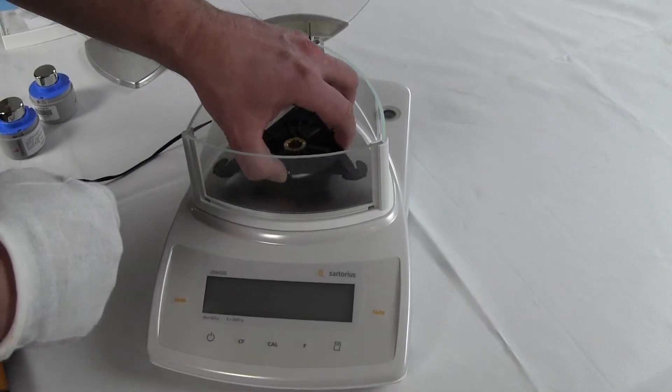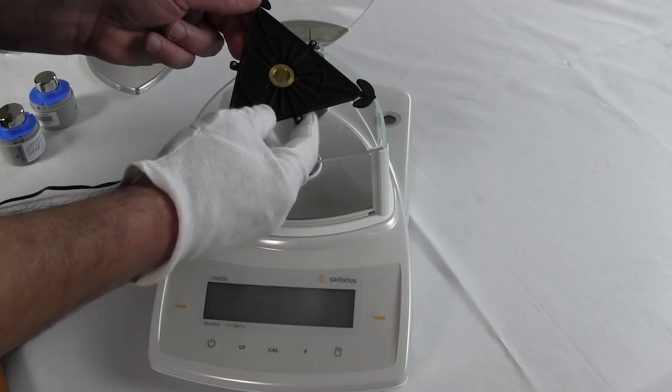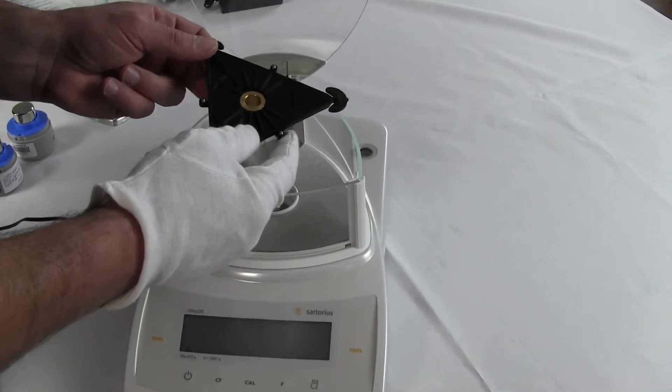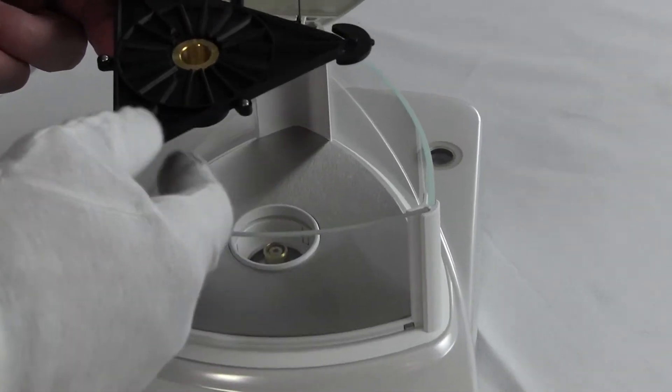Sartorius is one of the few manufacturers out there with this triangular weighing platform. It gives you more surface area. And then this here is our pan support. You can see Sartorius makes a great balance. Very simple design. There's not tons of parts here. Very easy to assemble.